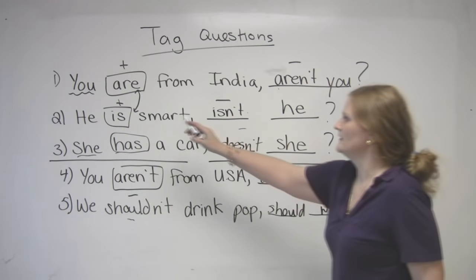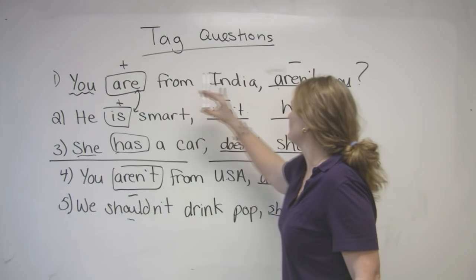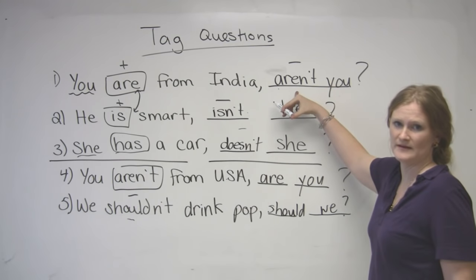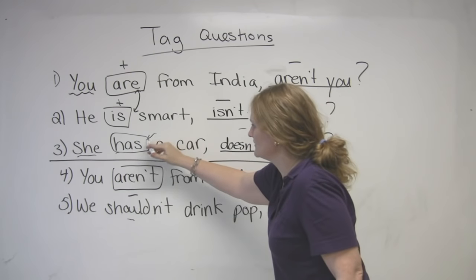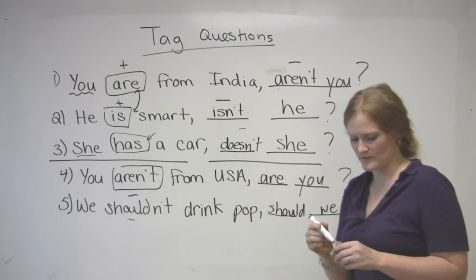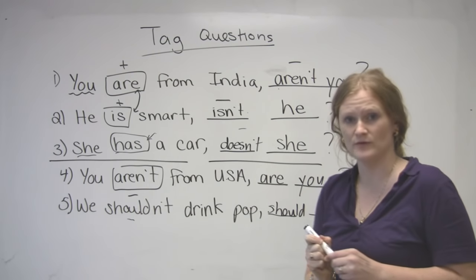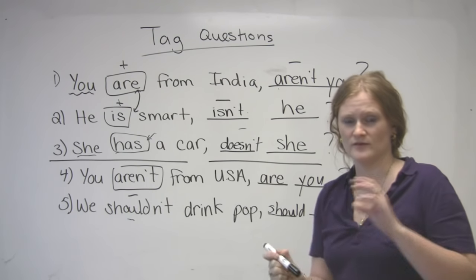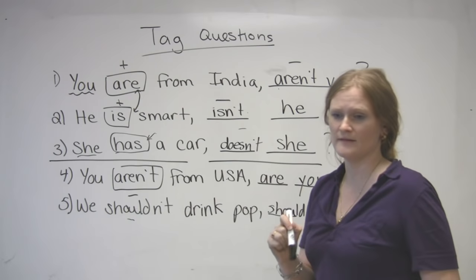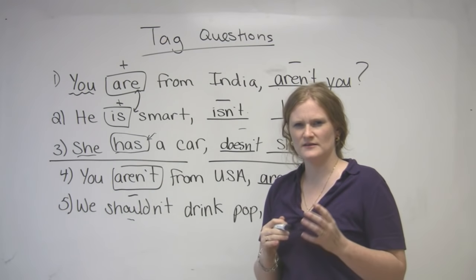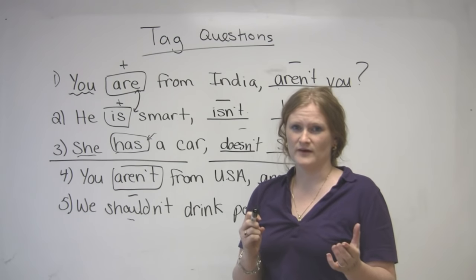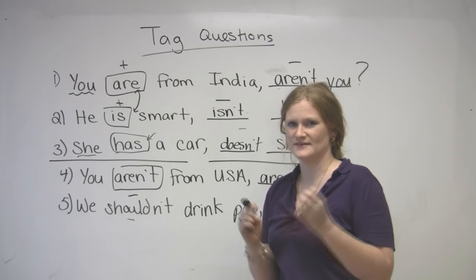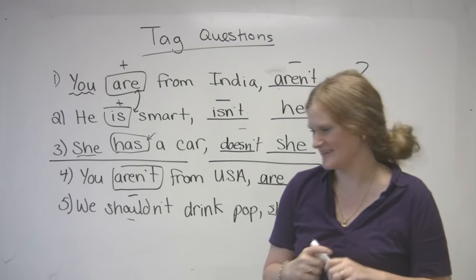So, an easy rule: if the statement is positive, your tag has to be negative. The subject doesn't change. What does change sometimes is the verb — some verbs require an auxiliary verb: do, don't, does, or doesn't. That's fairly easy to understand the questions. The difficult part is the answer, isn't it? Yes, it is.